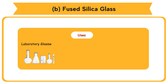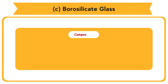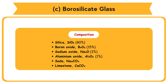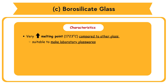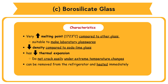Uses of fused silica glass: Laboratory glassware, optical lenses, telescope and microscope eyepieces. Borosilicate glass Composition: Silica SiO2 - 80%, Boron oxide B2O3 - 15%, Sodium oxide Na2O - 3%, Aluminium oxide Al2O3 - 1%, with soda Na2CO3 and limestone CaCO3. Characteristics: Very high melting point of 1723°C, suitable to make laboratory glassware. Lower density compared to soda lime glass. Does not crack easily under extreme temperature changes because it has low thermal expansion. Borosilicate glass can be removed from the refrigerator and heated immediately without cracking.